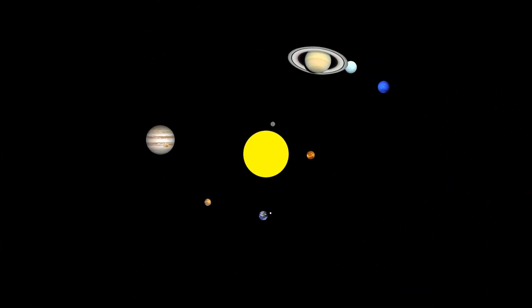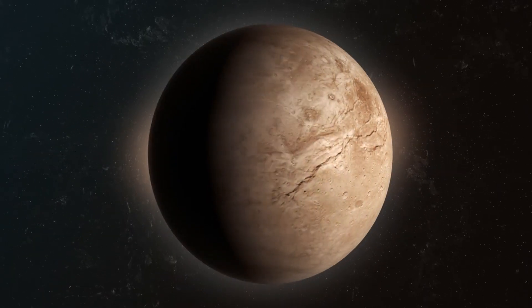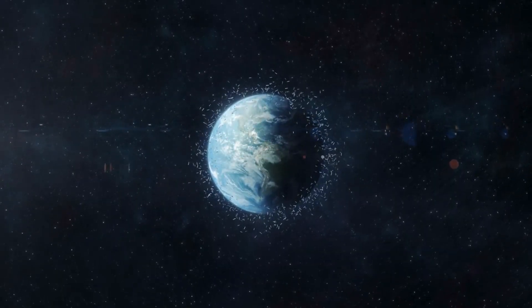First, it must orbit the sun. Second, it must be spherical in shape, meaning it has sufficient gravity to pull itself into a round shape. Third, and most crucially, it must have cleared its orbit of other debris.